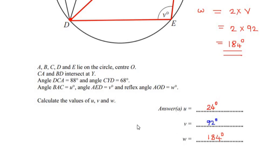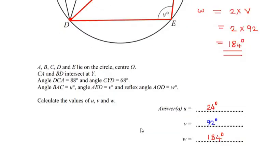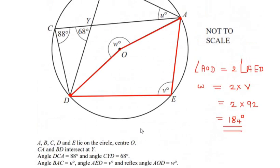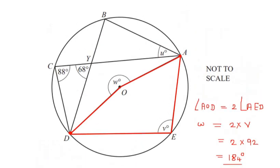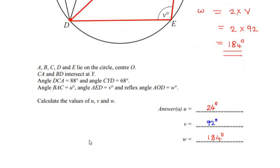So this is how we find the values of u, v, and w using circle theorems. I hope you understood all the steps and liked the video. Feel free to comment below if you have another way of solving it. If you're enjoying my videos, please like, share and subscribe to my channel. Thank you so much for watching.